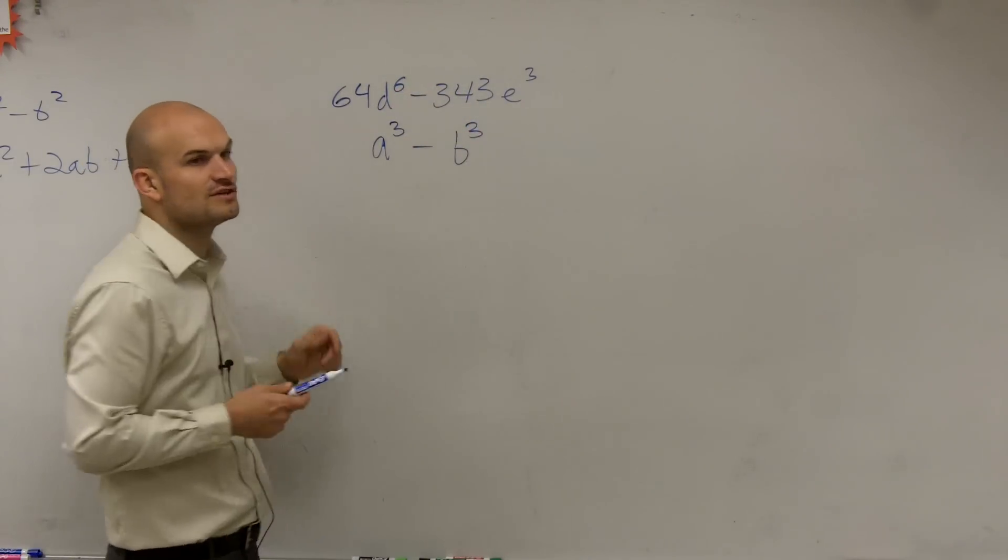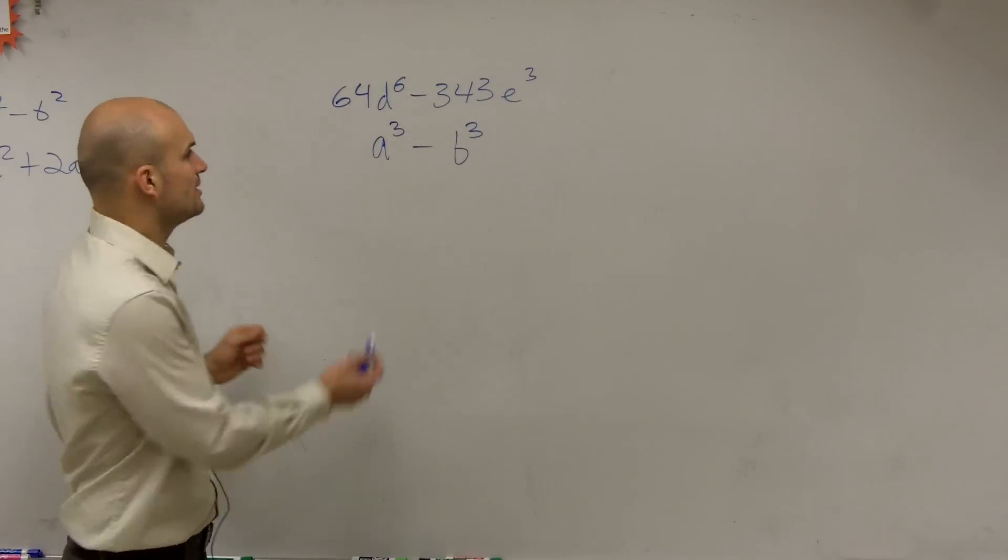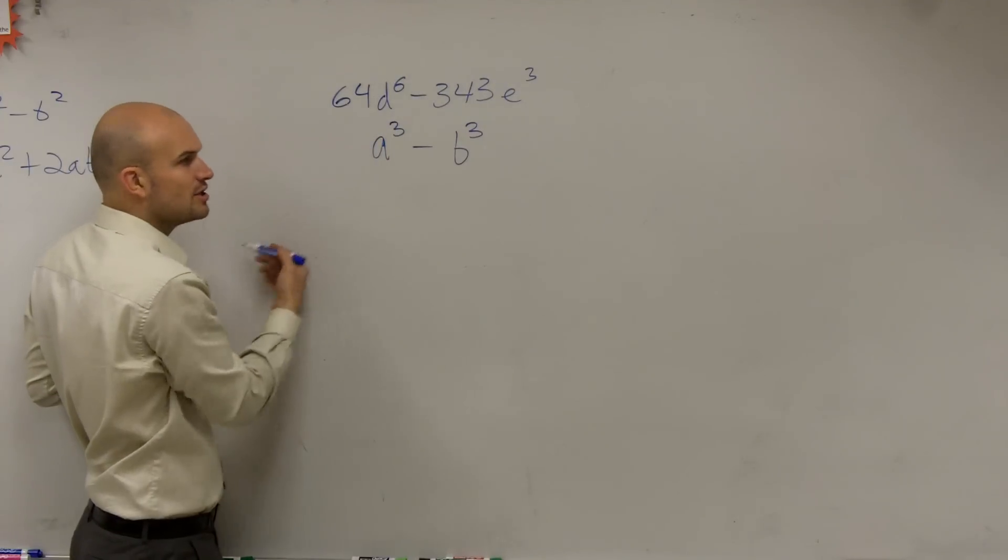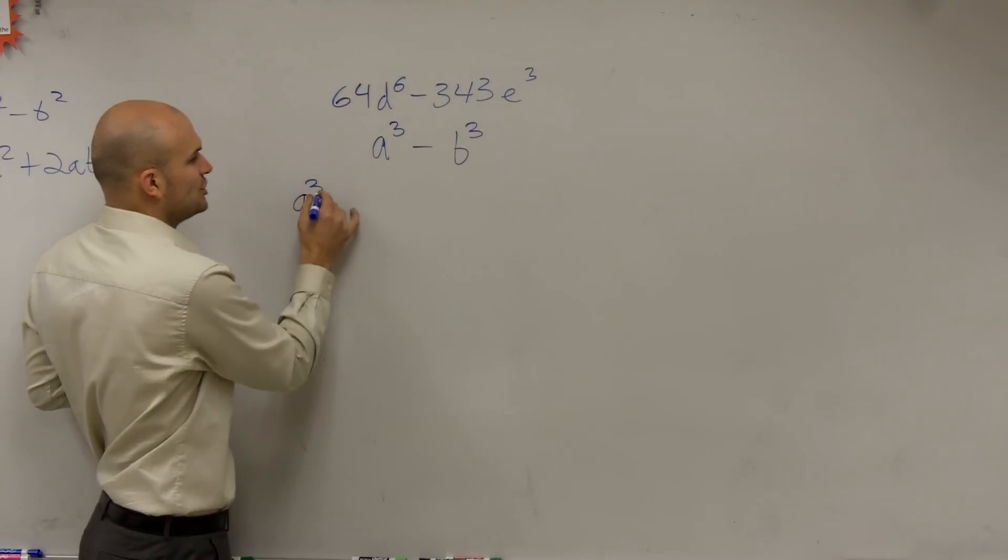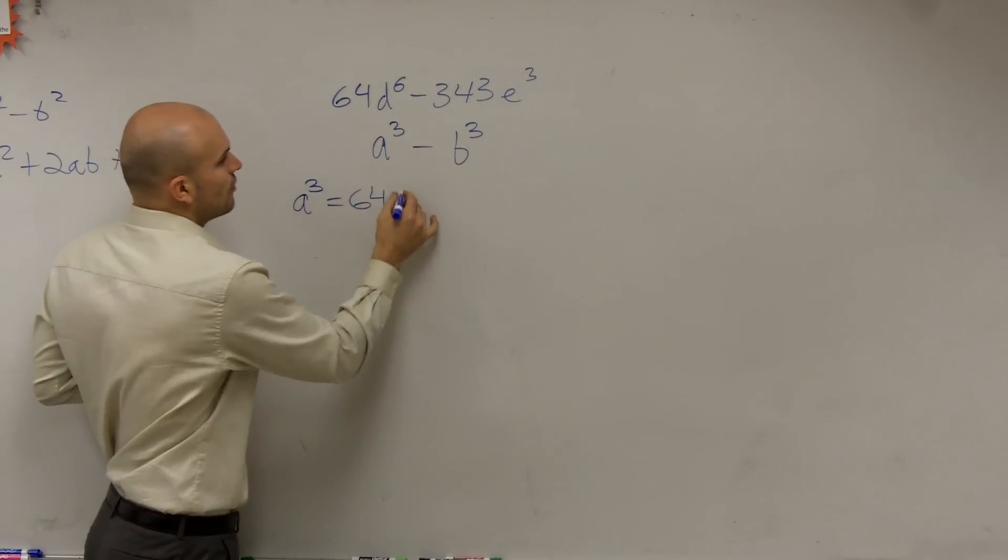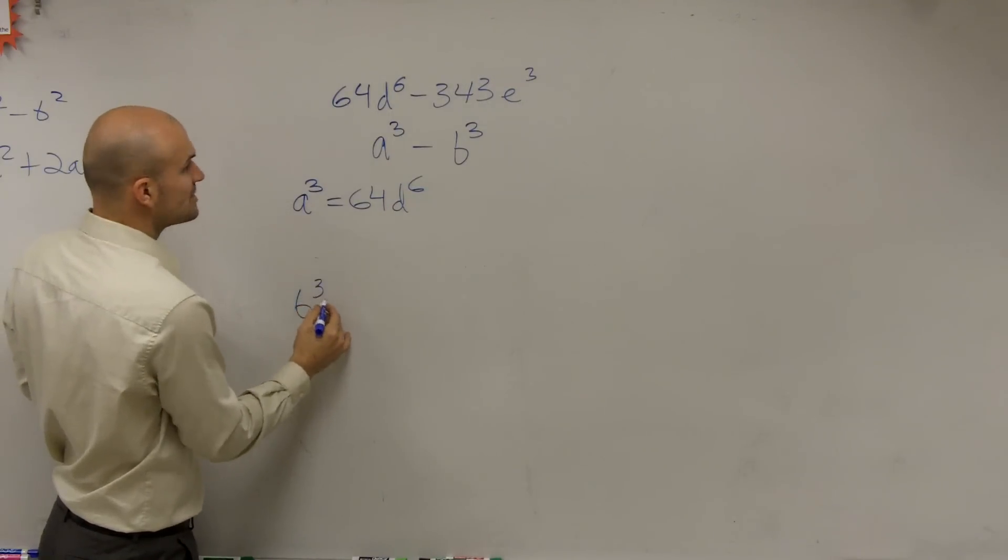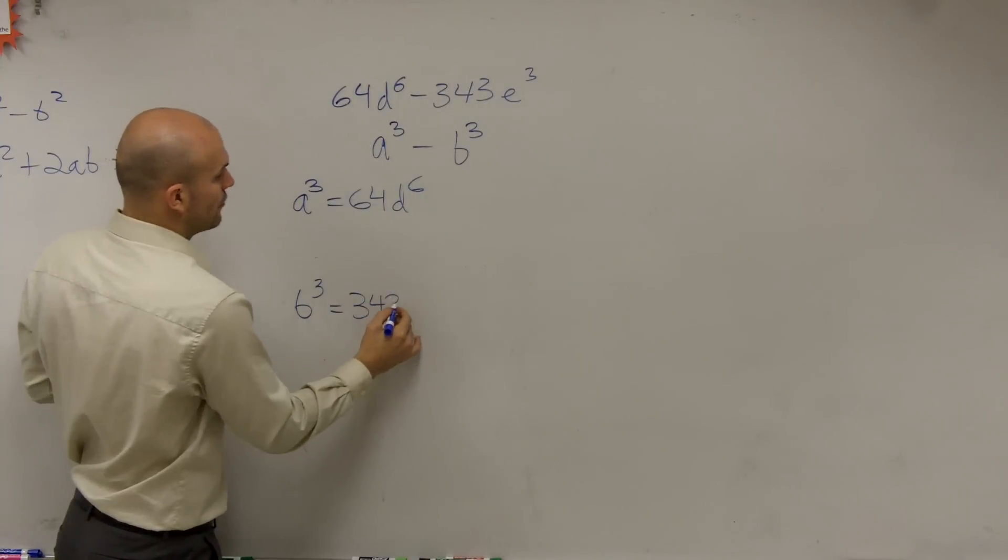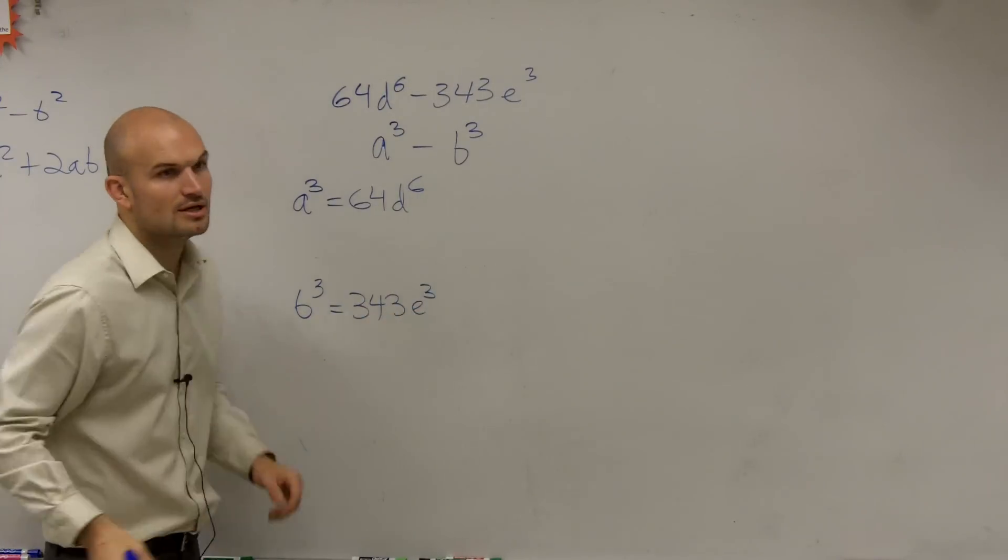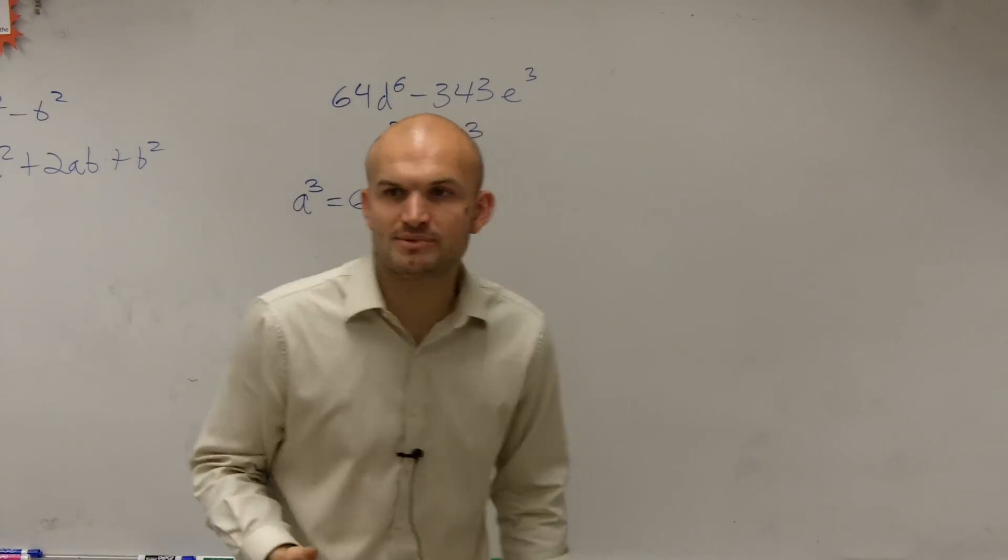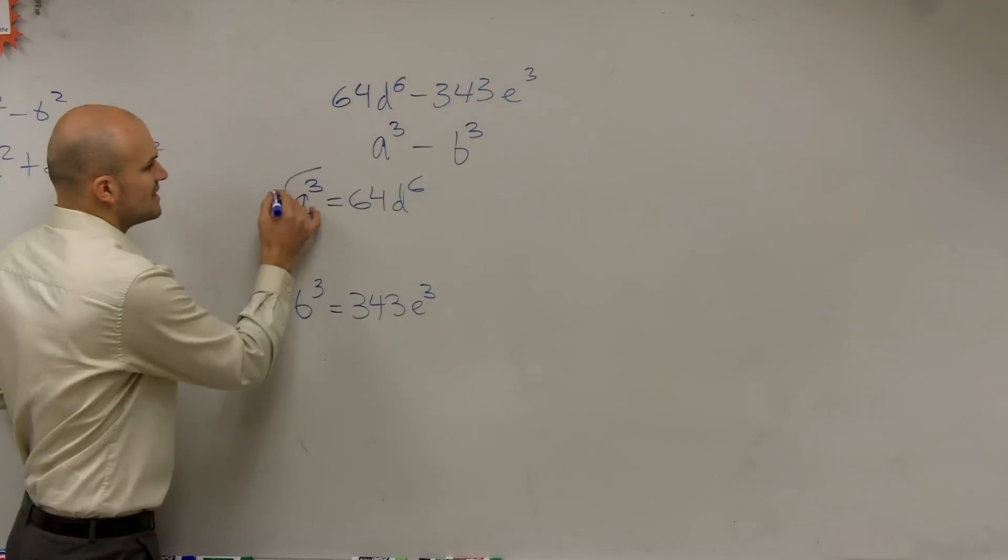So now let's look into difference of two cubes. Can we write this as a squared term? Well, let's take a look. a cubed equals 64 d to the sixth. And then can we do b cubed is equal to 343 e cubed. So can we write them as cubed numbers? Well, what we do is take the cube root.